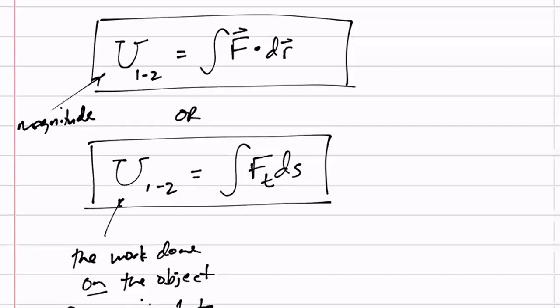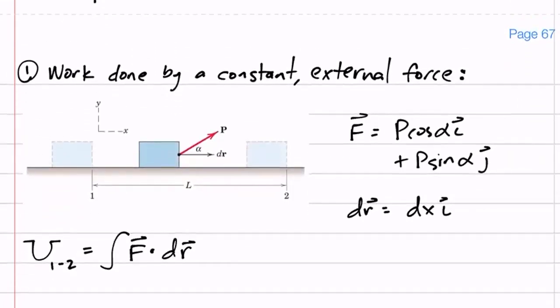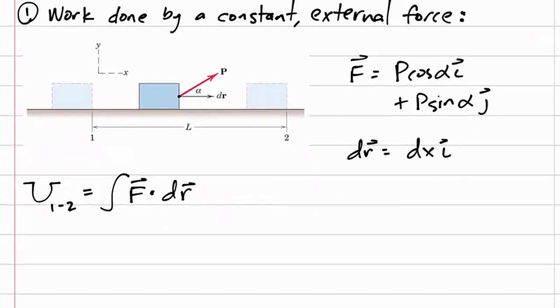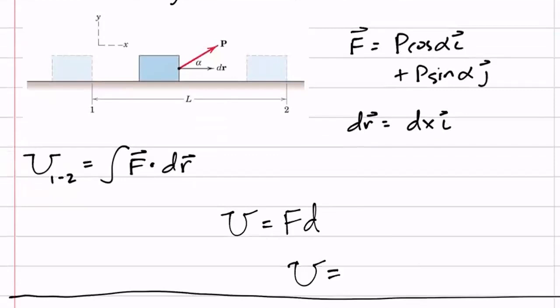I'm not going to want to do these integrals every time. Let's look at some common scenarios — do the integral and get an equation for the work for common things we'll see. I will print out this page and the next for you and bring them to class. For a constant force F, work is force times distance, but only the force that's in the direction of the distance. So for a constant force, U equals P cosine alpha times L.